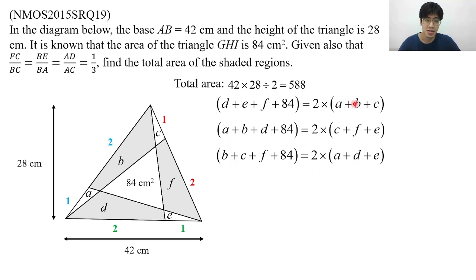Let's have a good look at these three equations. On the left, I have 1A, 2B, 1C, 2D, E, and 2F, and then 3 times 84. And then on the right, I would have some A, some C, some D, some E, and then some F.